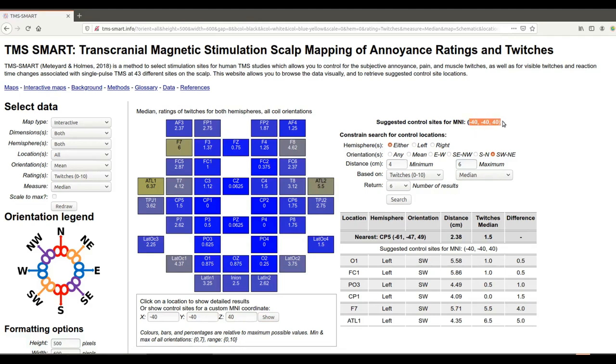So now it's matching for this location, and again you can choose to find control areas in the left hemisphere four to six centimeters away based on twitches, and it's suggested a new list of potential control locations.